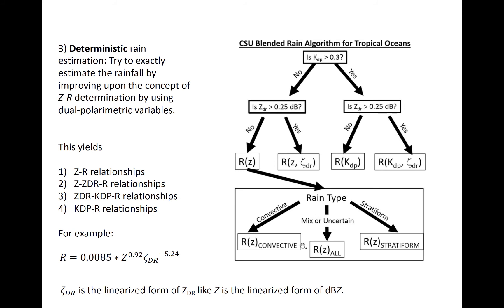To the right is a diagram outlining one example of a decision tree for dual-polarimetric rainfall estimation that uses not just Z, but also ZDR and KDP to estimate rainfall. Four different types of relationships can be formed based on the magnitude of each variable following this decision tree.